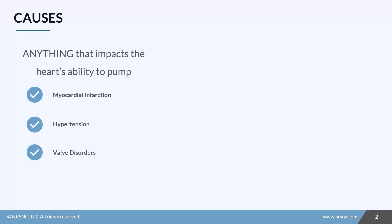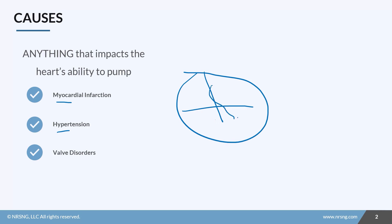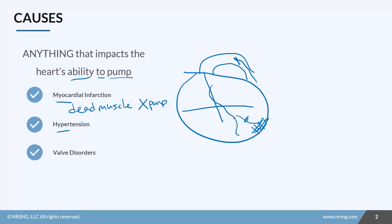What exactly causes heart failure? Anything that impacts the heart's ability to pump can potentially cause heart failure. The top two causes are MI and hypertension. With an MI, if one of these coronary arteries is blocked, this muscle is going to die. Dead muscle cannot pump, so we lose the heart's ability to pump. In hypertension, there's an increased pressure in the system, and the heart has to work even harder against that pressure, resulting in increased afterload.